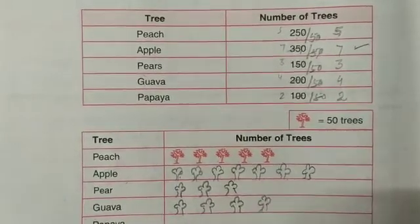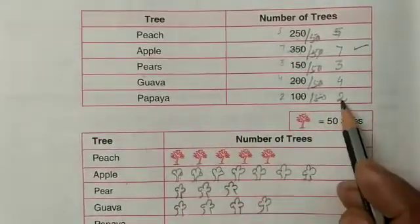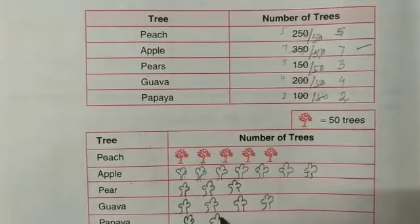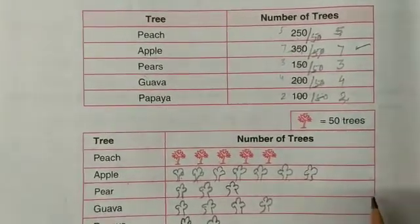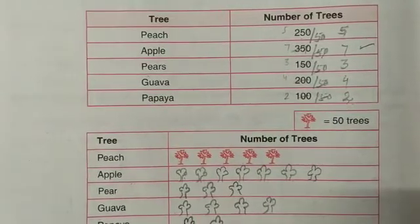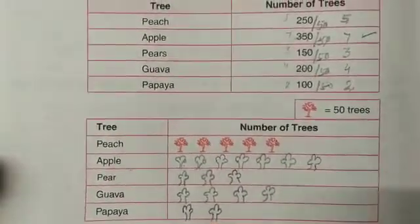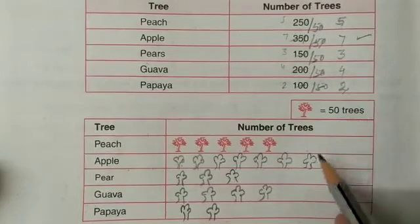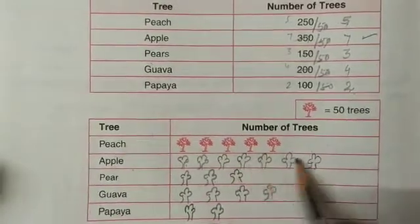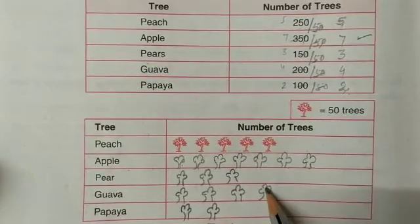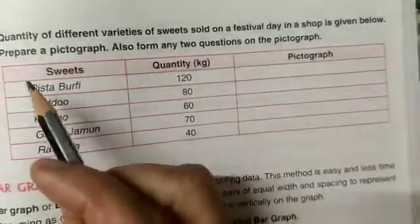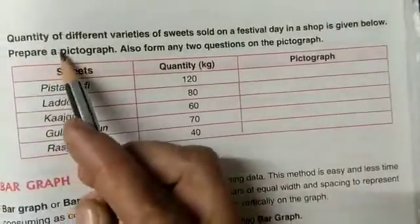You can see in the picture. Likewise you can draw this. And what about papaya — you are having 2, so mark two trees here. You can draw it likewise in this way to complete your picture graph. One tree is equal to 50, so it becomes easy to represent the data in picture graph form. Clear.